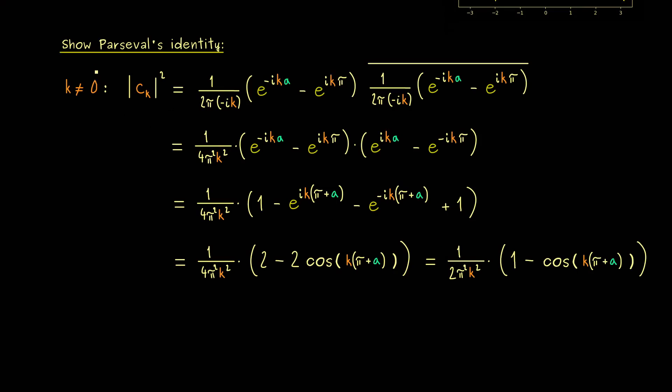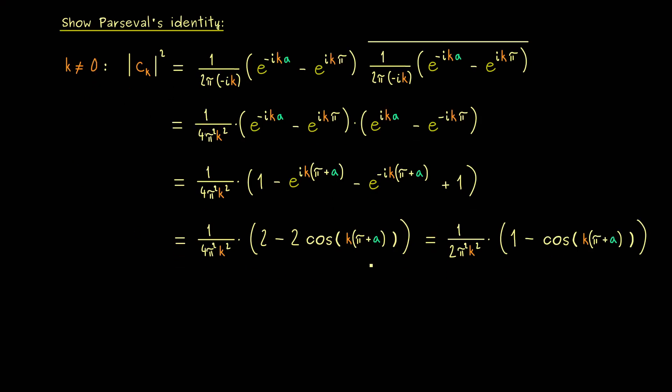And now we know, to show Parseval's identity, we have to sum them up. So the next step is to write a sum symbol. And there, please don't forget, we also have c_0 involved. This one was a plus pi divided by 2 pi. And now we also have to square it.